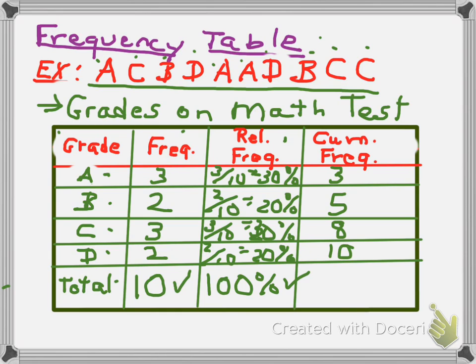Lastly, I filled in the cumulative frequency column. So your cumulative frequency is that frequency plus all preceding. So the first one is going to be 3. The next one is going to be 3 plus 2, which is 5. The next is 3 plus 2 plus 3, which is 8. And the last is 3 plus 2 plus 3 plus 2, which is 10. This 10 should be equal to your total, which it is. So we did that correctly.